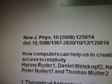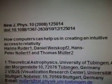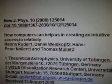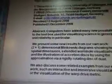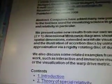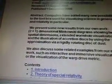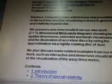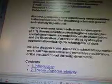Next comes up this here — I don't know what the ID number is, but those are the code numbers there. How computers can help us in creating an intuitive access to relativity — Hans Ruder, Daniel Weiskopf, Hans-Peter Nollert, and Thomas Müller. Theoretical astrophysics, 2008 abstract. Computers have added many new possibilities to the toolbox used for visualizing science in general and relativity in particular. We present some new results from our own work: 2+1 dimensional Minkowski diagrams showing two spatial dimensions, extended wormhole visualization, and the illustration of accretion disks using the approximation via a rigidly rotating disk of dust. We also discuss related examples from earlier work such as interactive and immersive visualization, or the visualization of the warp drive metric. There's theory, wormholes, wormholes, warp drive bubbles — sounds cool.